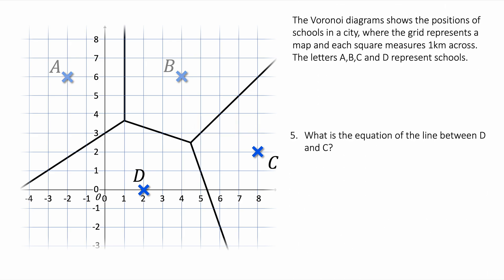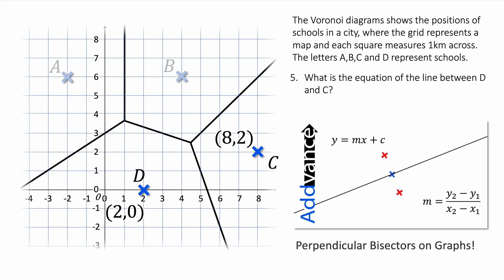Let's look at question five. It says what is the equation of the line between D and C? This is where we have to do perpendicular bisectors. If you've not seen my perpendicular bisectors on graphs video, I released that recently and that will definitely help. I would recommend watching that video.